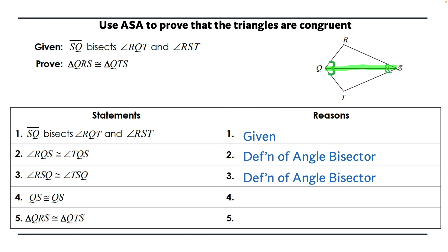Statement four says QS is congruent to QS — that's the reflexive property, it's congruent to itself. Now we've got two angles and the side between them, completing our angle-side-angle proof.